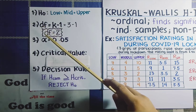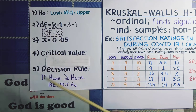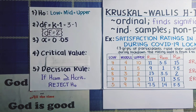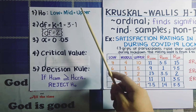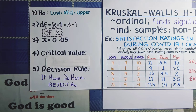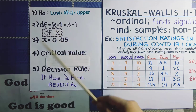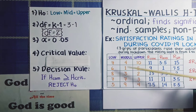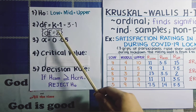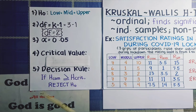The next thing is to determine our null hypothesis, degrees of freedom, alpha level, critical value, and decision rule. Our null hypothesis is that there is no significant difference in satisfaction ratings among lower class, middle class, and upper class — or that the satisfaction ratings in all three classes are just the same. Our degrees of freedom is k minus 1, where k is the number of groups. We have 3 groups, so degrees of freedom is 3 − 1 = 2. Our alpha level is 0.05, or 5%. To find the critical value for the H Test, we use the chi-square critical value table.